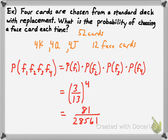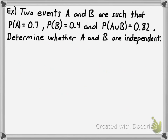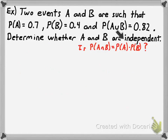Let's do one more example. Two events A and B are given: the probability of A, the probability of B, and the probability of either A or B occurring. We want to determine whether A and B are independent. To do that, we need to check whether P(A and B) equals P(A) × P(B). It's easy to compute P(A) × P(B) since we have both values: 0.7 × 0.4 = 0.28.